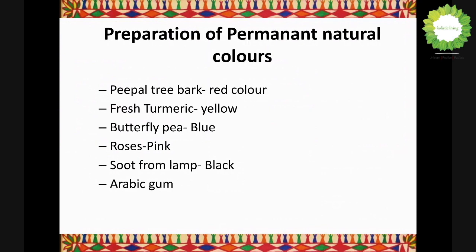For yellow, you can use fresh turmeric — not the powder, not dried ones. Use a traditional mortar and pestle, grind it into a fine paste, take a muslin cloth, filter the liquid, and you will get a bright yellow color. For blue you can use butterfly pea flower, for pink you can squeeze rose petals, and the soot from a lamp can be used for black.